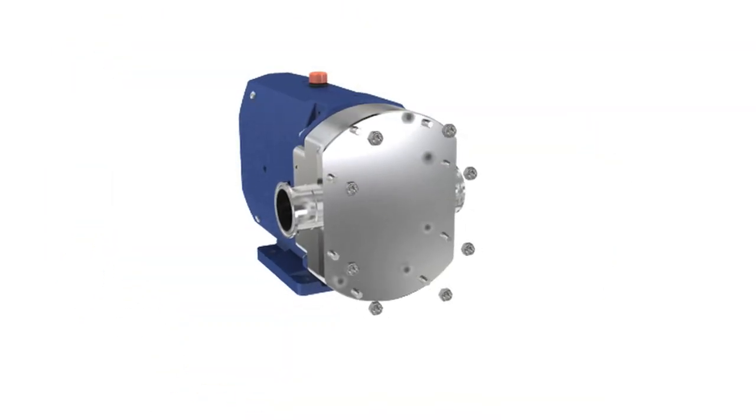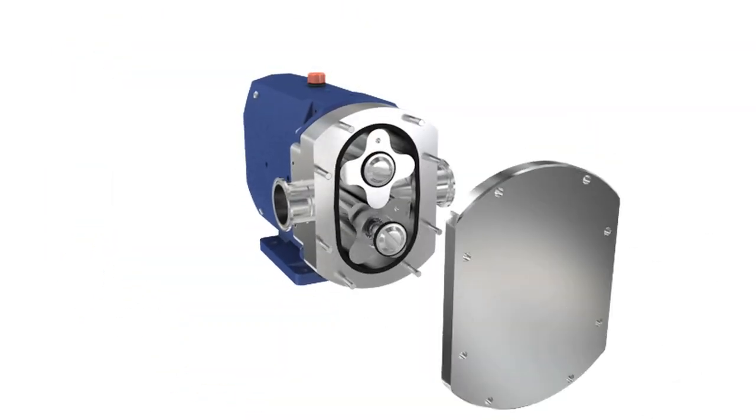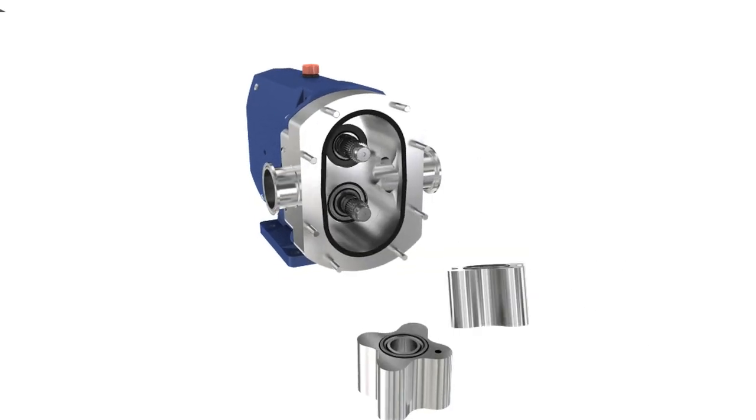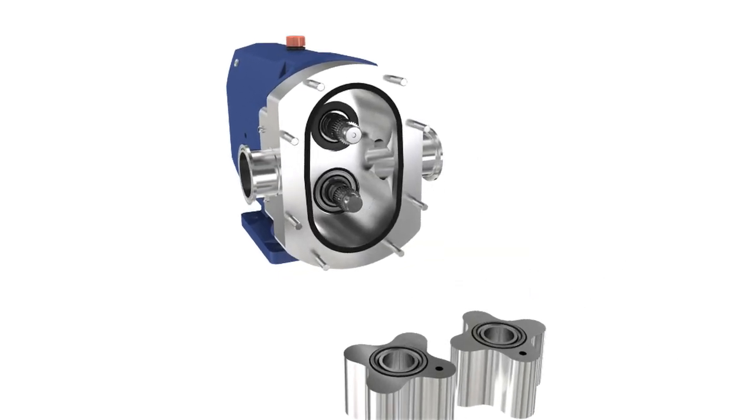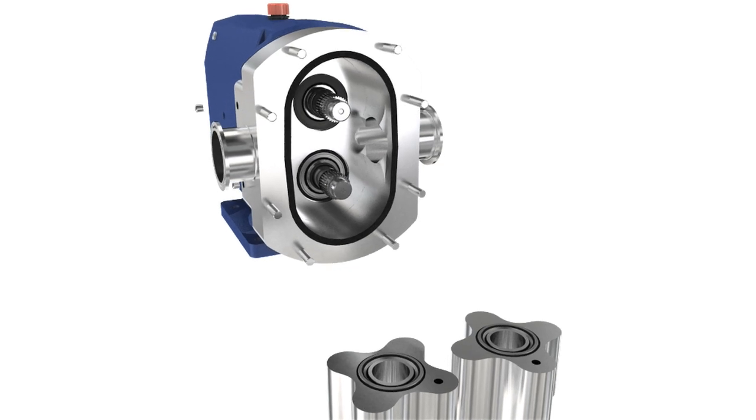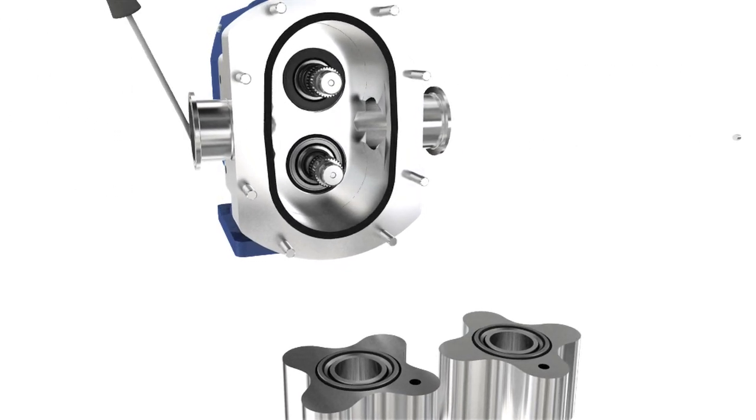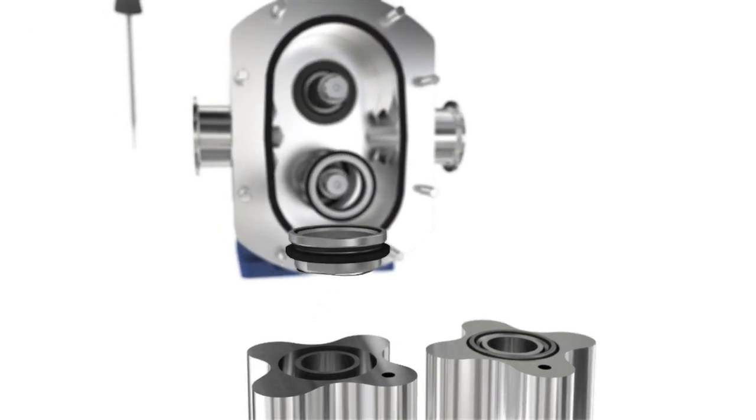One of the most critical components in any pump is the seal. The SX features front-loading seals. This allows inspection or repair without the need to remove the rotor case from the pump or the pump from the process line. This highly simplifies maintenance and greatly reduces downtime.